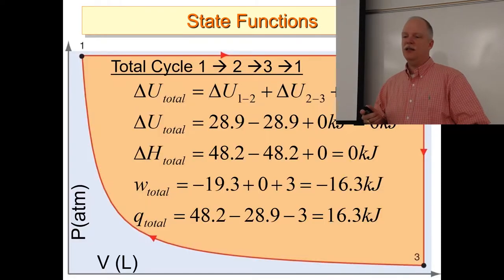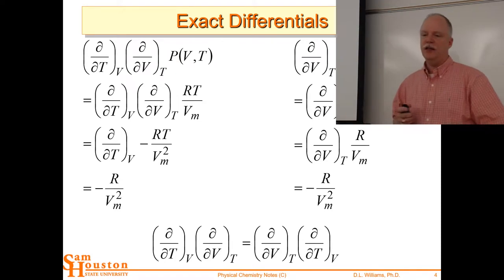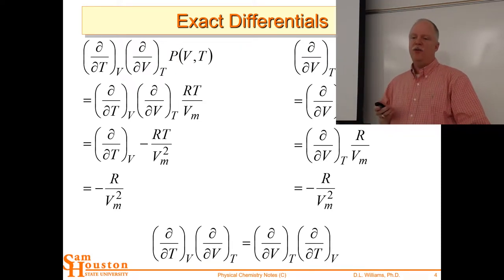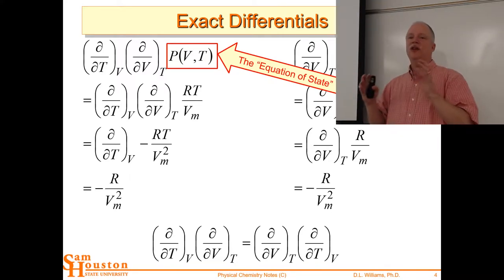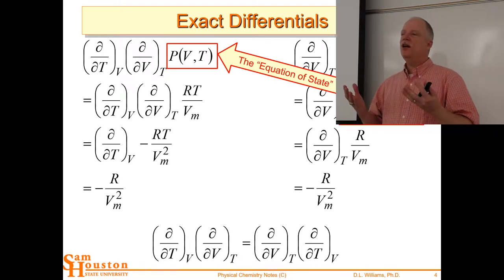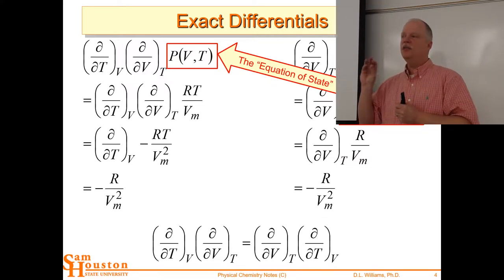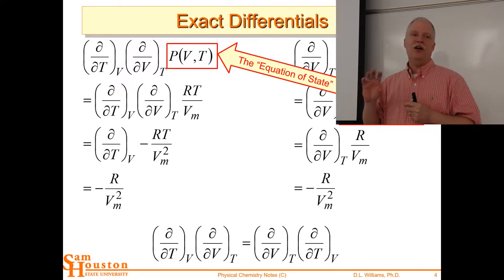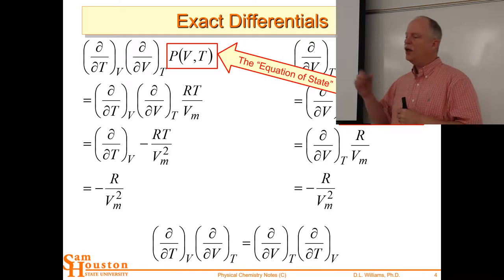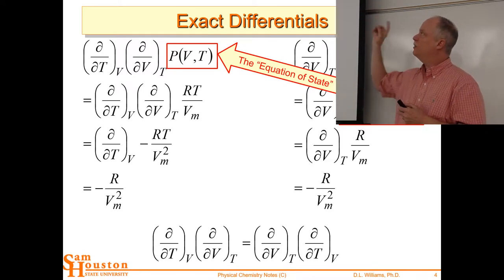Let's look at what we mean by an exact differential. If we have an equation of state — one of your vocabulary words this week — this is an equation that groups together all the different state variables. The one you already know is the ideal gas law. If you solve that for pressure, it tells you how pressure behaves when you change the other state variables — volume and temperature. A lot of times we fix the number of moles, so it ends up in the denominator under volume, and we call it the molar volume — an intrinsic property of a substance.